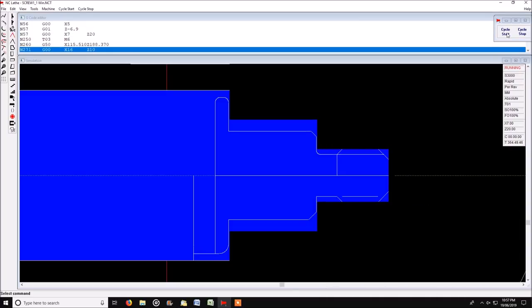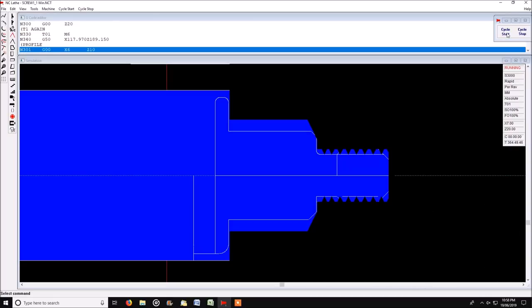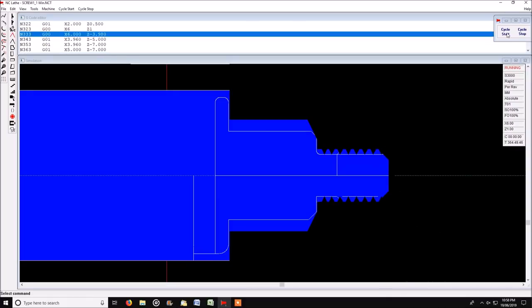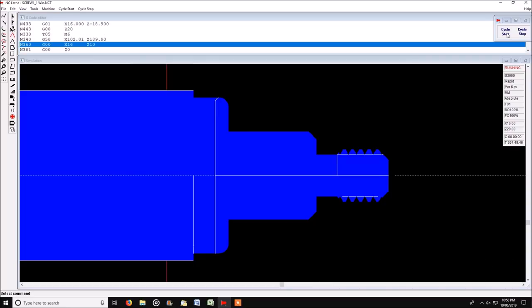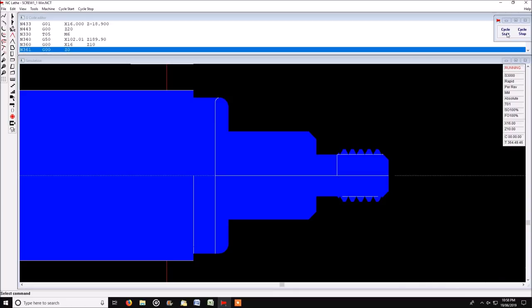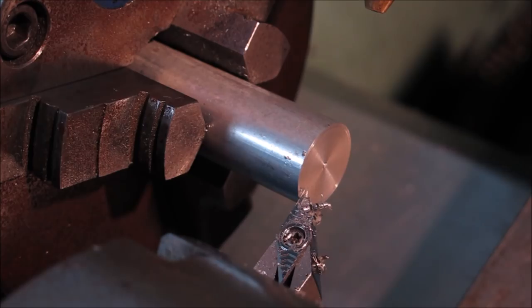Then we thread it and go back to clean up the front chamfer and finish turning the part. This gives much cleaner beginning and end to the thread, as you'll see. Seems a long way to go about it, but it's how you get the best result.